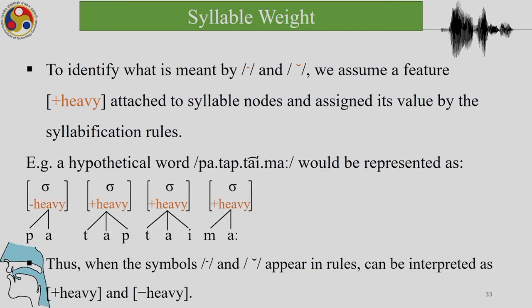We assume a feature [+heavy] attached to syllable nodes, assigned by syllabification rules. For a hypothetical word 'put-up-timer', the syllables would be represented as [−heavy], [+heavy], [+heavy], [+heavy], [+heavy]. Thus, when the symbols macron and breve appear in rules, they can be interpreted as [+heavy] and [−heavy] respectively.